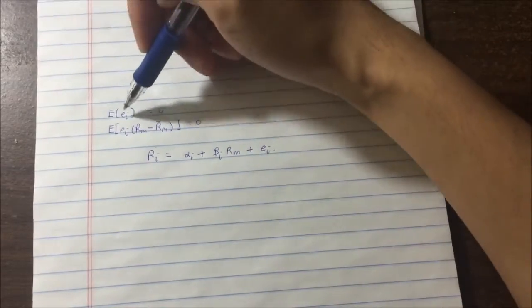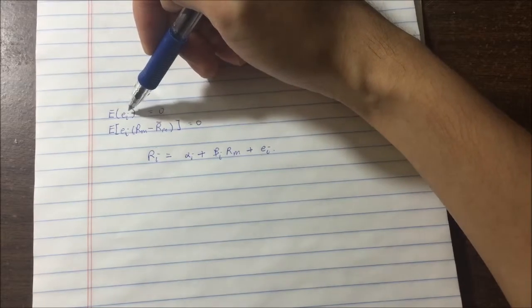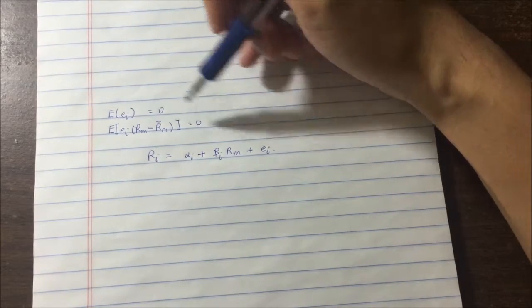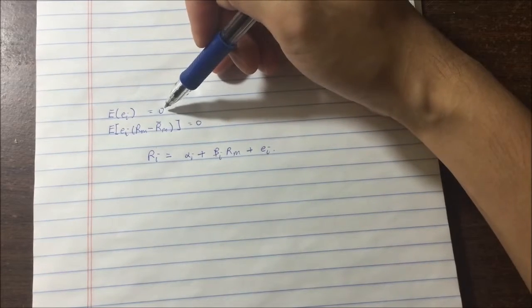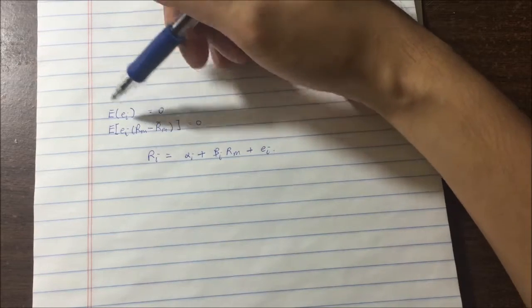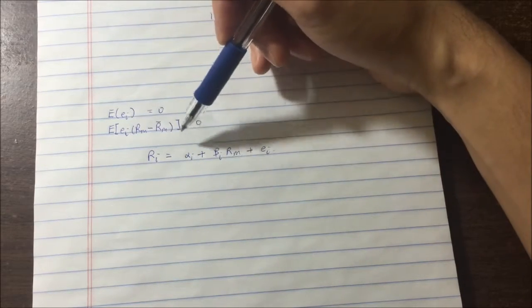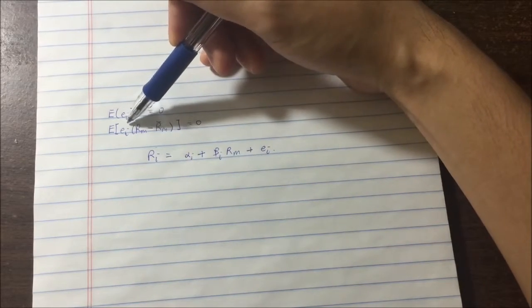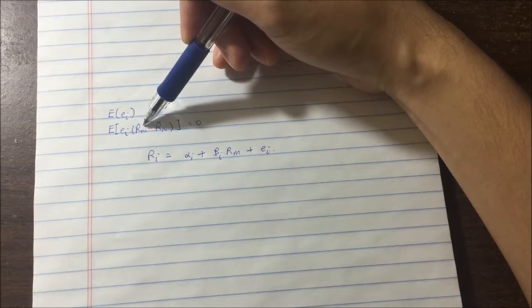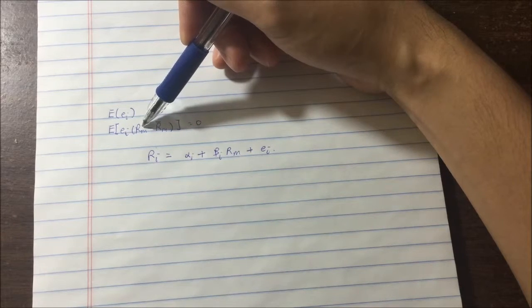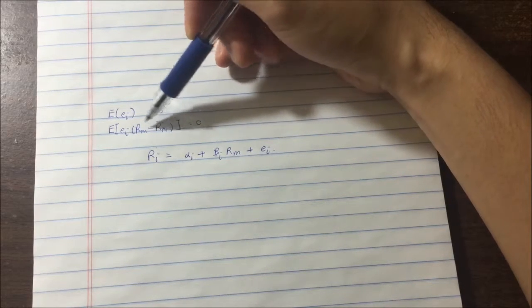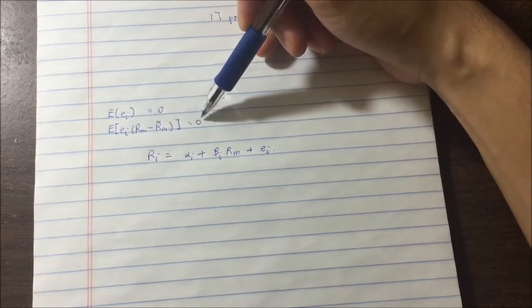So E(εI) would be the expected return of this variance of this unknown is zero. And if you multiply, the second thing we have to know to derive the variance is that εI times the market return minus the average market return, so this term is going to be zero.